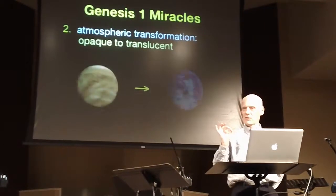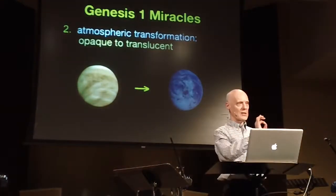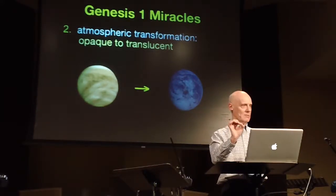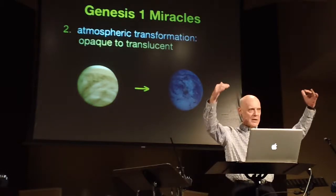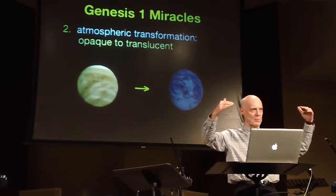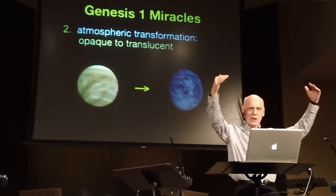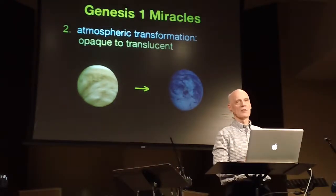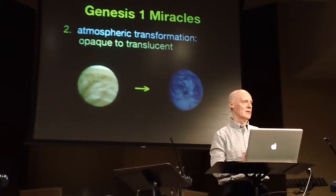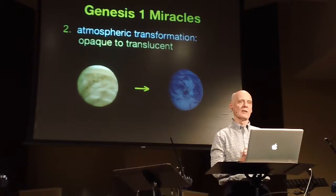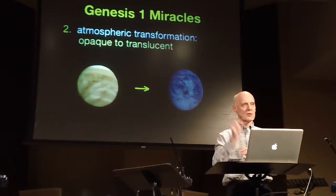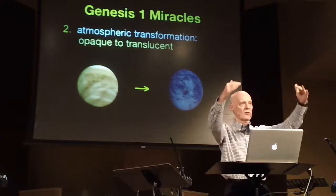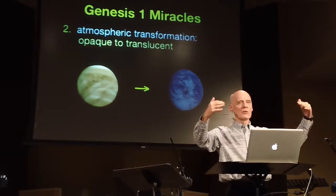Now notice the text doesn't say that God created the light. It doesn't say that God made the light. It says, let the light be. This is the first time that light appears on the surface of the waters of planet earth. Before day one, it was dark, because the clouds of the primordial earth were opaque to light. What God did on day one is he transformed the atmosphere of the earth from an opaque condition to a translucent condition, so that light could come through and photosynthesis could begin.